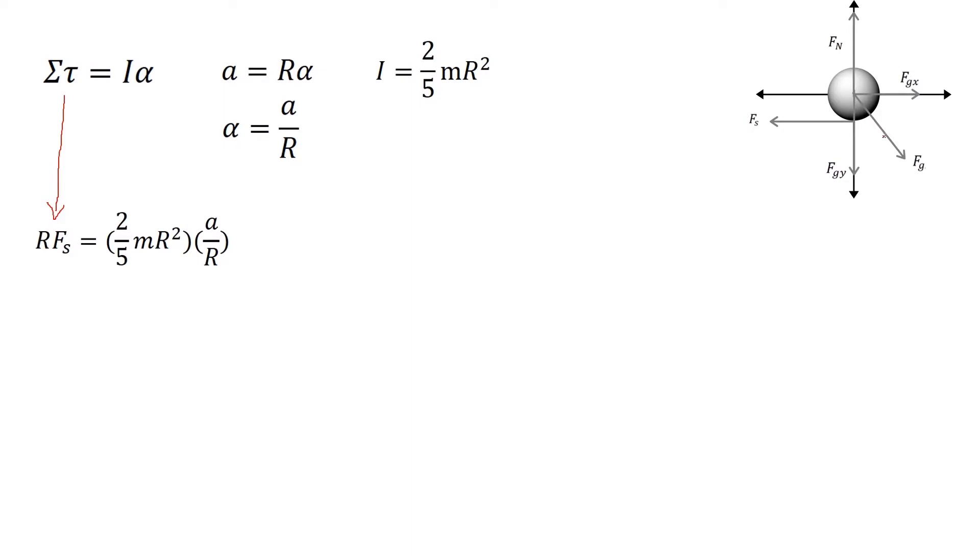This is because the normal force and force of gravity don't produce any rotation, only the frictional force. Sine 90 equals one, and the acceleration is substituted as well as the inertia. With this, the r is canceled and we arrive at equation one.